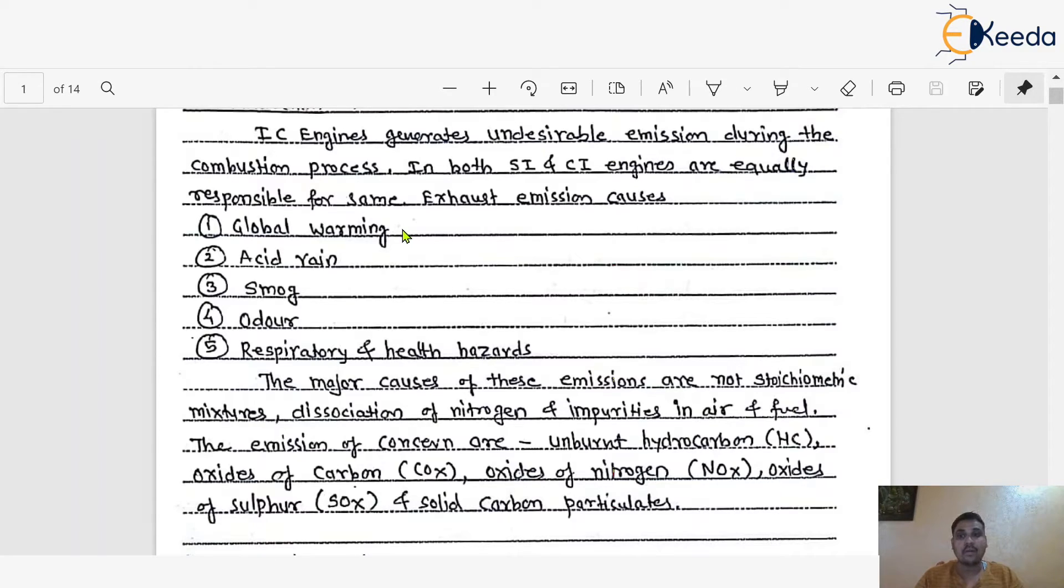The different things because of the emissions will be happening like global warming. The temperature of the earth is now going to increase. Many automobiles are available in the world: two-wheeler, four-wheeler, then trucks and buses.